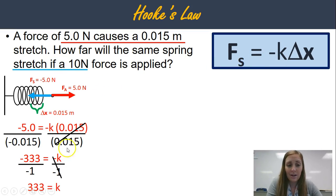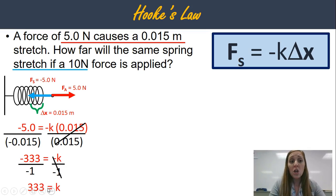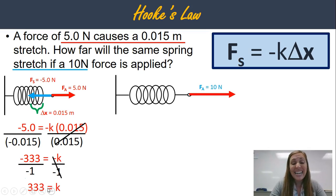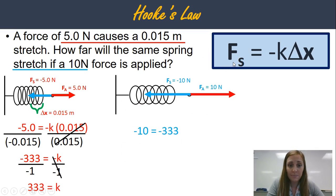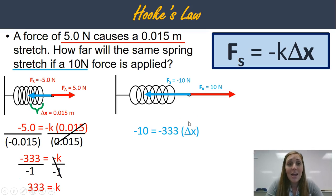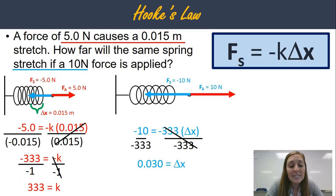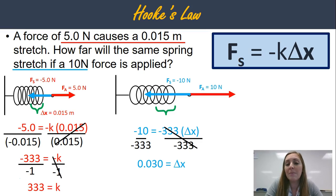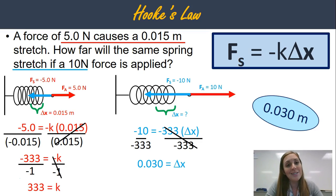Divide both sides by negative one, and k is 333. Now k itself is positive 333, but in the equation we need the negative. So for the second scenario — same spring, same spring constant — I've applied a 10 newton force, which means the spring force is negative 10 newtons. So negative 10 equals negative 333 times delta x. Divide both sides by negative 333, and delta x equals 0.030 meters.